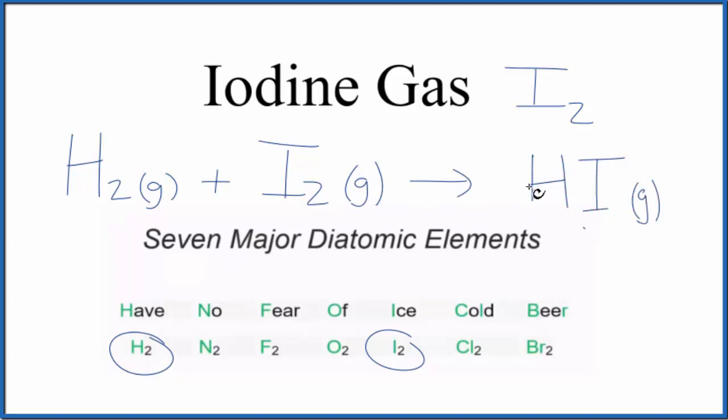So let's balance this because we have one hydrogen here, two here, an iodine, and an iodine. Let's put a coefficient of two so it's balanced. But the point is, when you hear iodine gas, when you read that in a word equation, it's going to be I2.